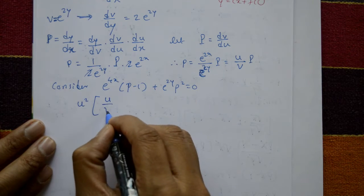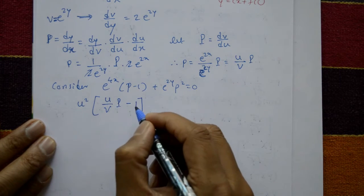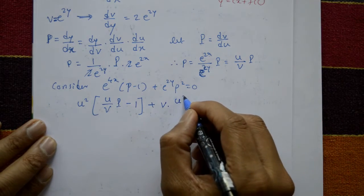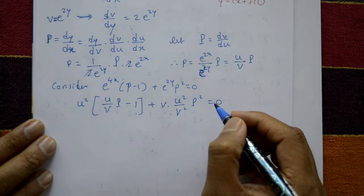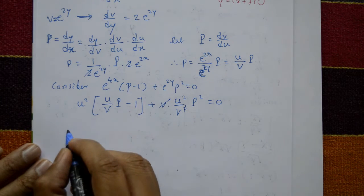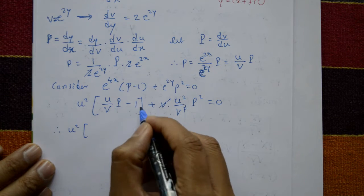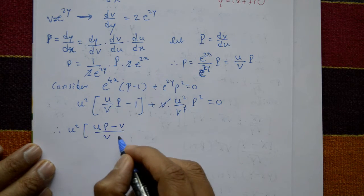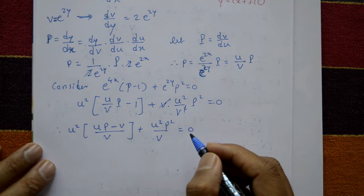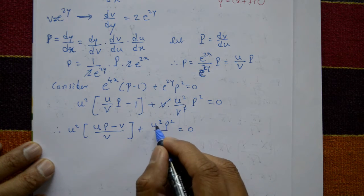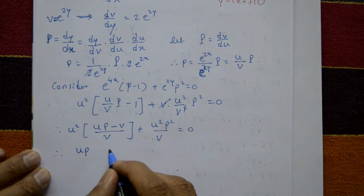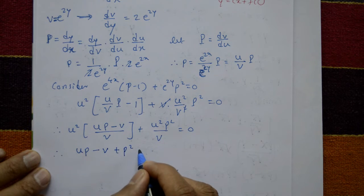Consider the equation: e raised to 4x into p minus 1 plus e raised to 2y into p square equal to 0. E raised to 4x equals u square. Substituting p equals u over v times capital P: u square into u over v times P minus 1, plus v into u square over v square times P square equals 0. After simplification, u times P minus v plus P square equals 0.